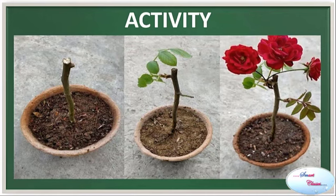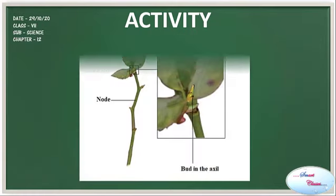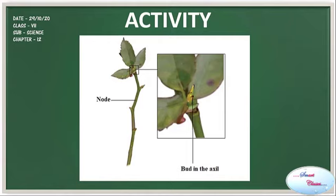Apart from flower buds, there are buds in the axil of leaves which develop into shoots. These buds are called vegetative buds. A bud consists of a short stem around which immature overlapping leaves are folded. These vegetative buds can also give rise to a new plant.